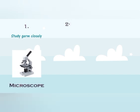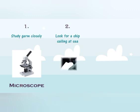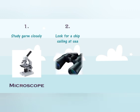Second — look for a ship at sea. To see a ship in the sea, we use this device. This is binoculars. By adjusting the lenses, we can see the far away ships.